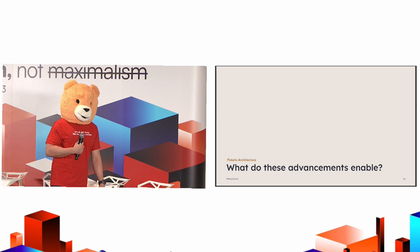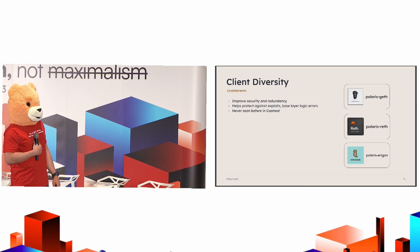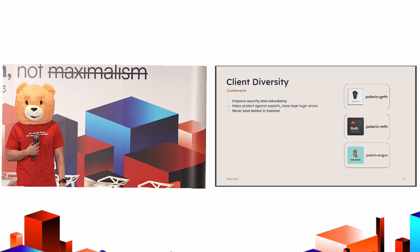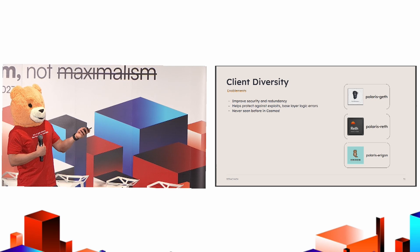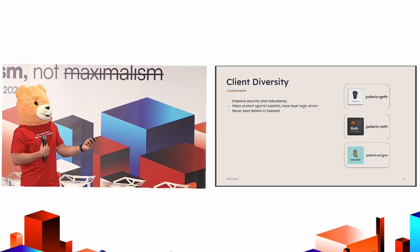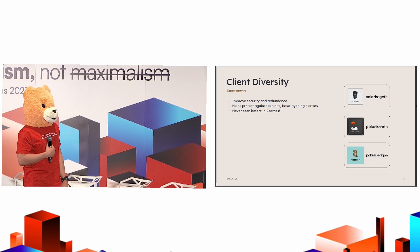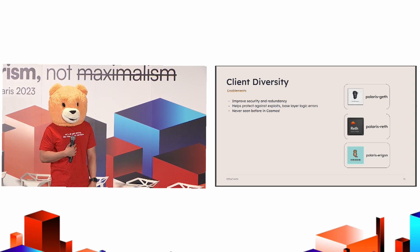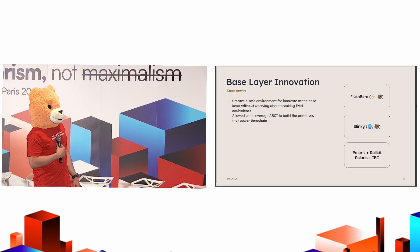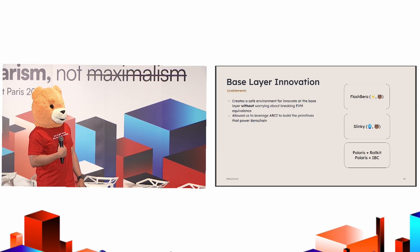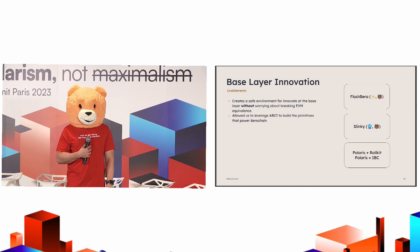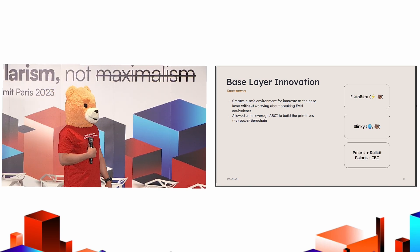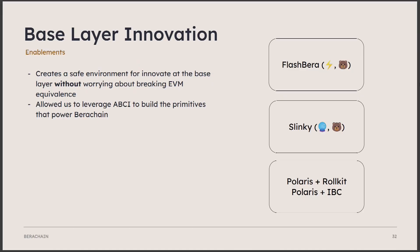So what do these advancements actually enable? The first exciting thing is genuine client diversity in Cosmos for the first time. On BearChain, all transactions go through the EVM, and by proxy all of them will be utilizing different clients depending on what execution client that validator or node is running. This is really good for security against exploits and is the first time we've seen this in Cosmos. It also allows for interesting things at the base layer — introducing application logic natively, writing DeFi logic used in our proof-of-liquidity system and tying it into ABCI, and building products like FlashBear, Slinky (the oracle), and integrating RollKit and IBC into Polaris.